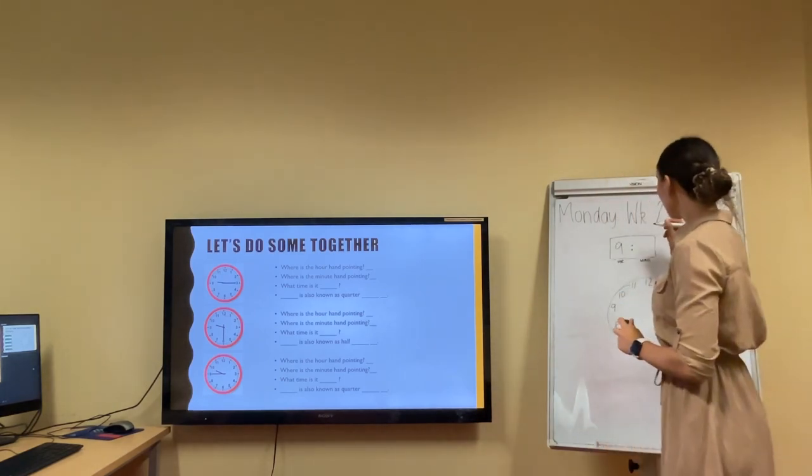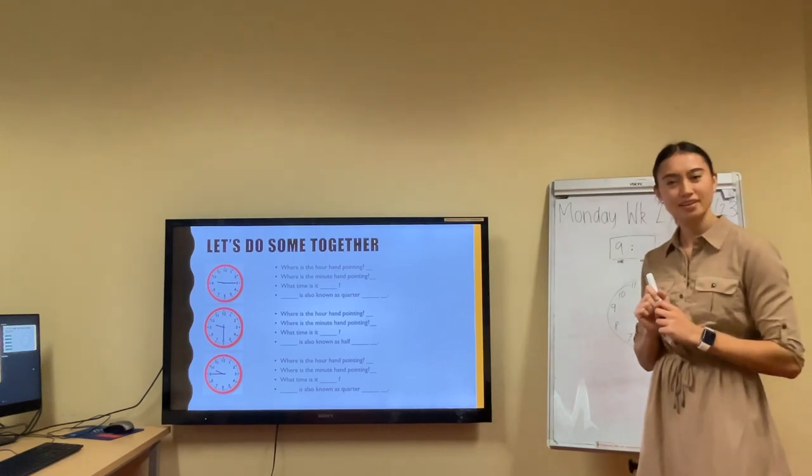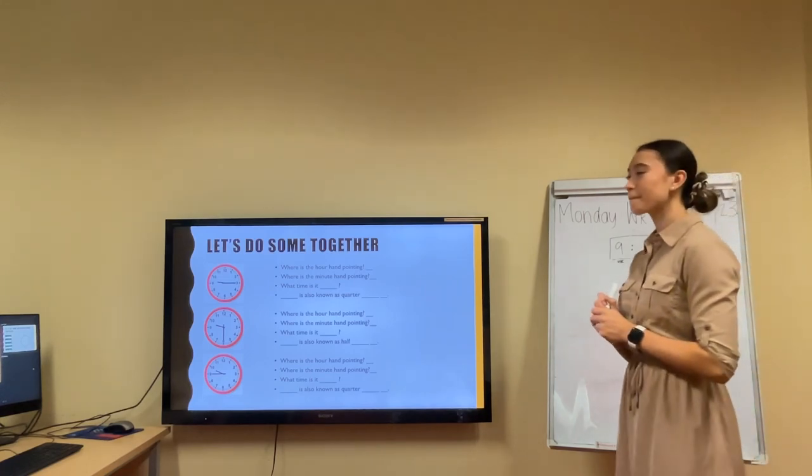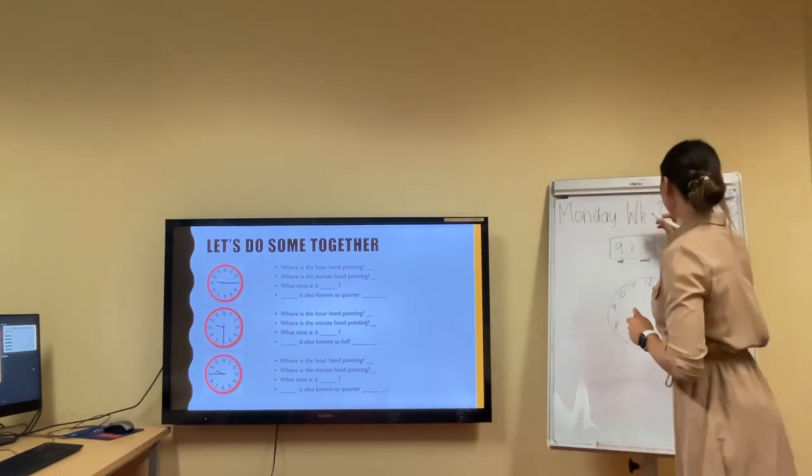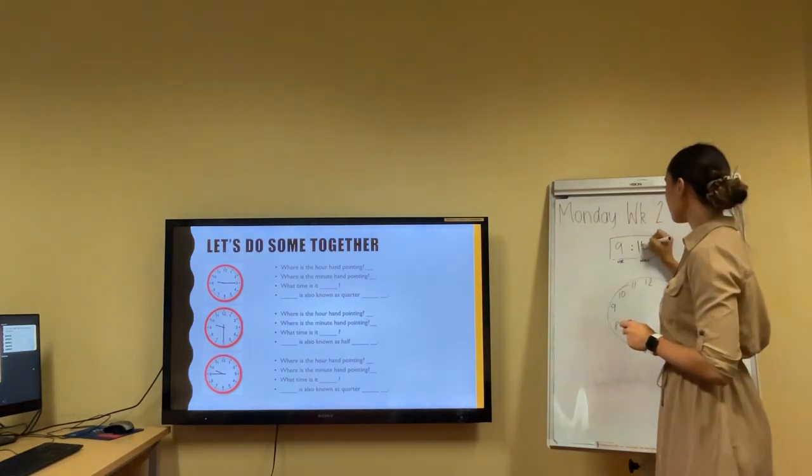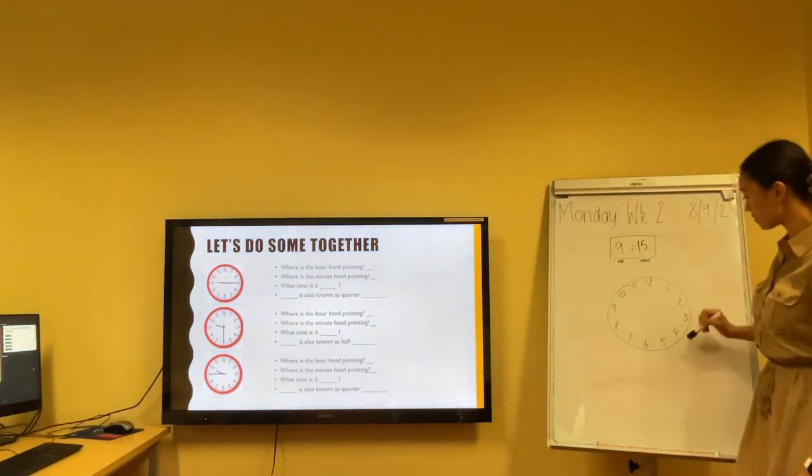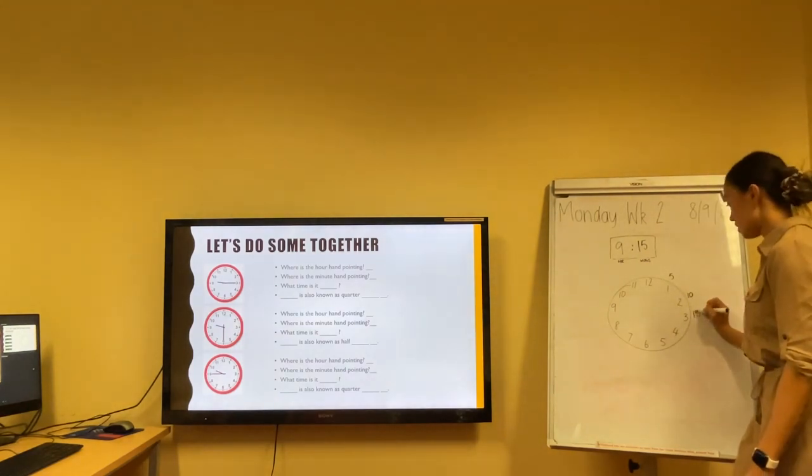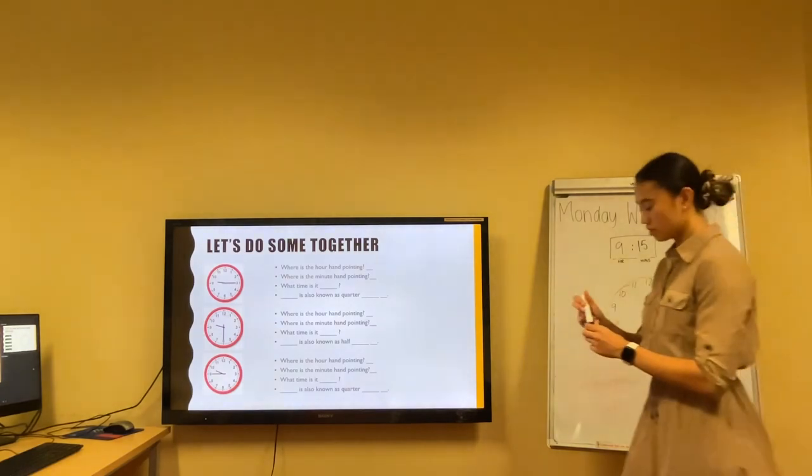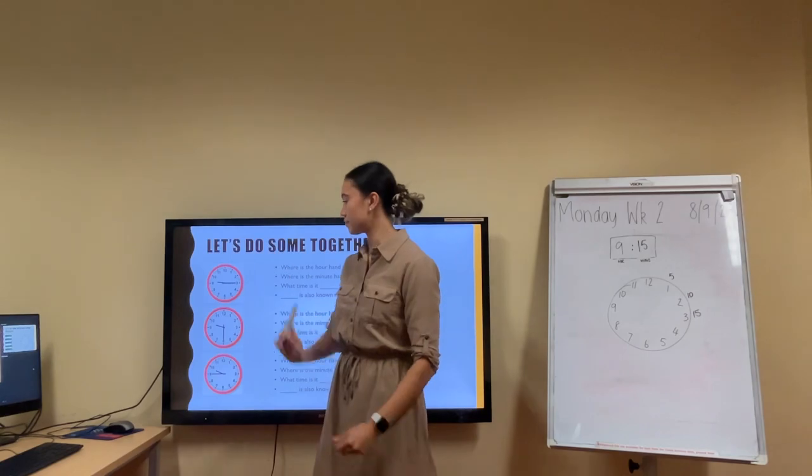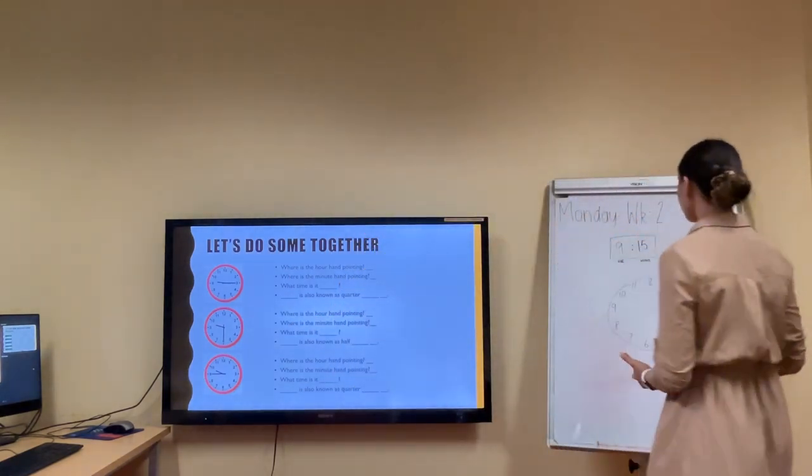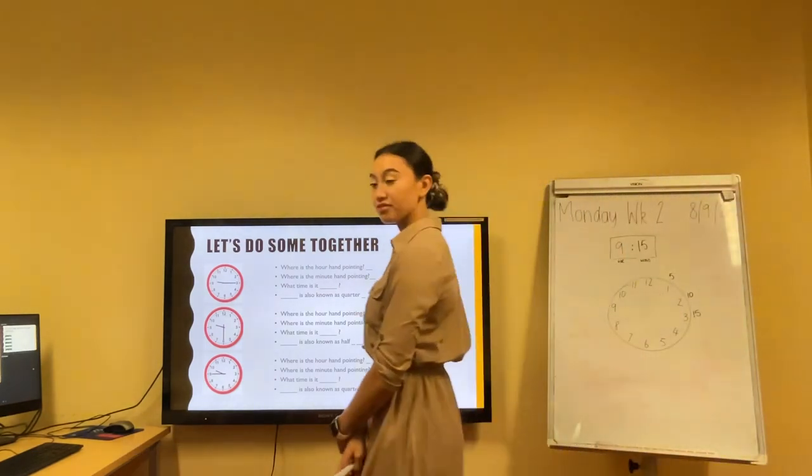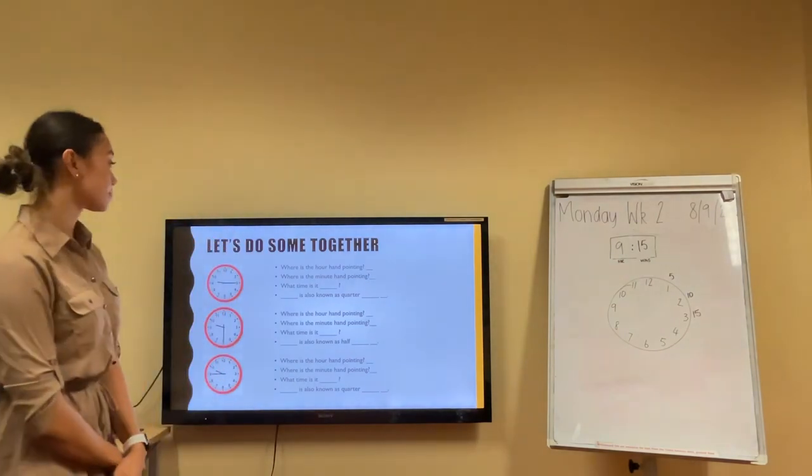The hour hand is pointing at the 9 and the minute hand is pointing at the 3. Now, if the minute hand is at the 3, is it 3 minutes past 9? No, exactly. It is not 3 past 9. It is 15 past 9. Remember, it's going up in fives. So we've got 5 minutes here, 10 minutes here, 15 minutes here. So on the clock, 5, 10, 15. So 15 minutes past 9.